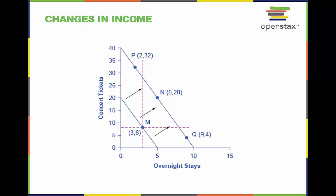On the new budget constraint, a choice like N would be made if both goods are normal goods. If overnight stays, in this case, is an inferior good, a choice like P will be made. If concert tickets are an inferior good, a choice like Q will be made.